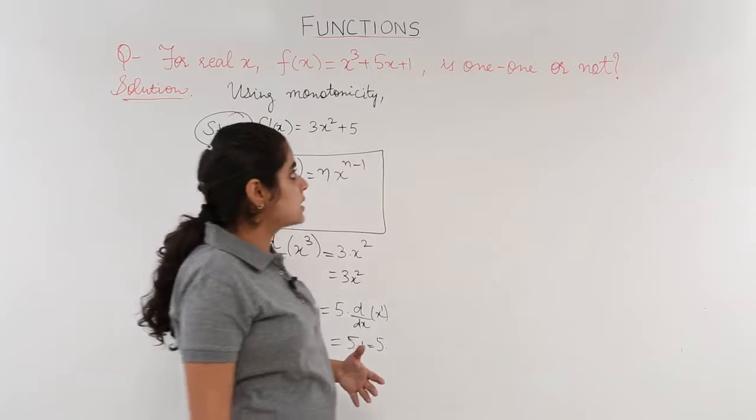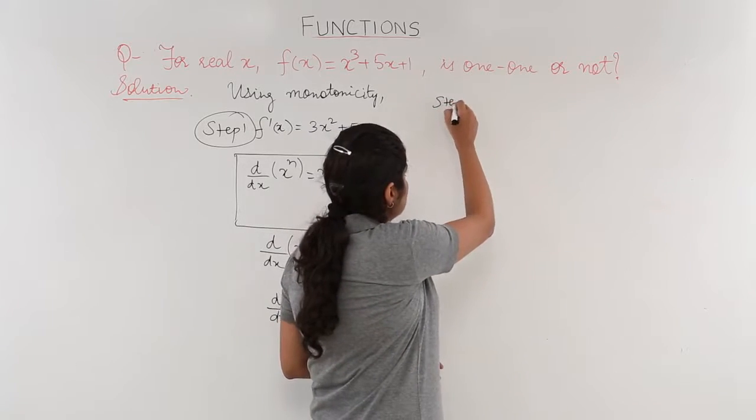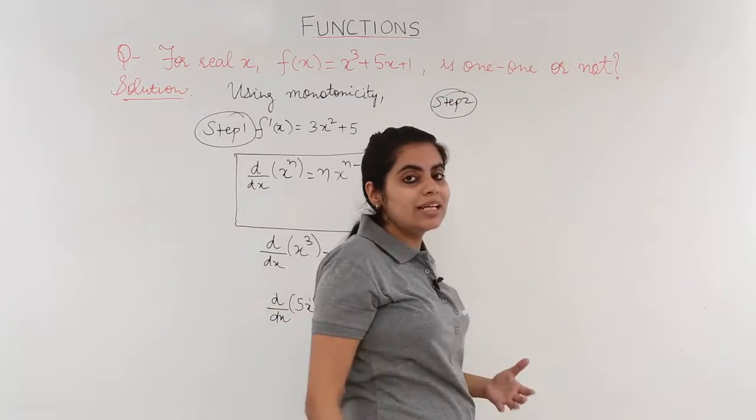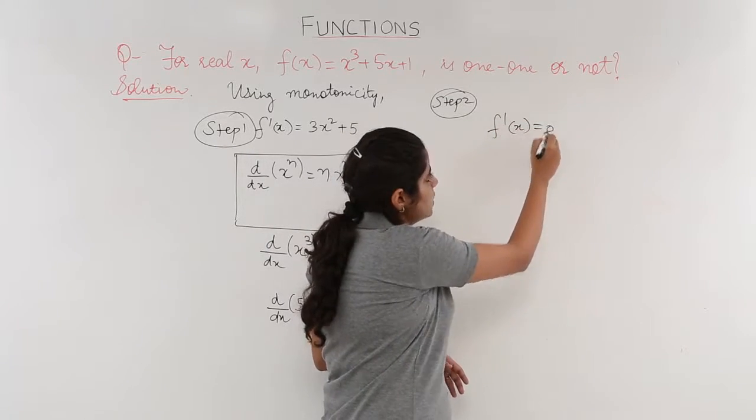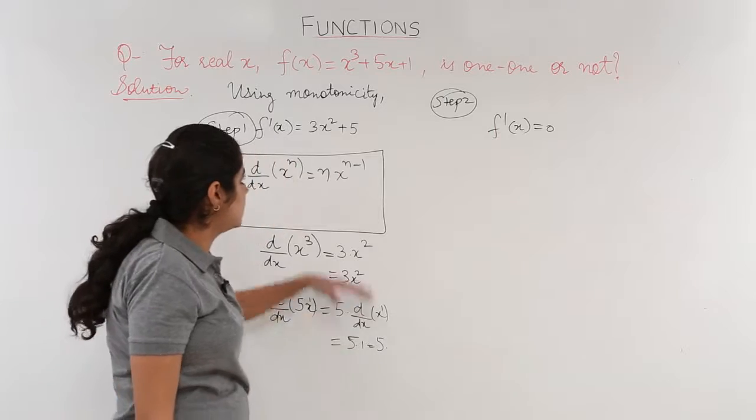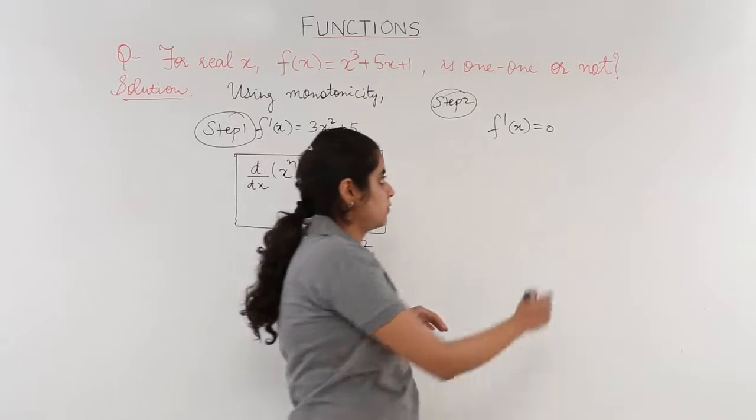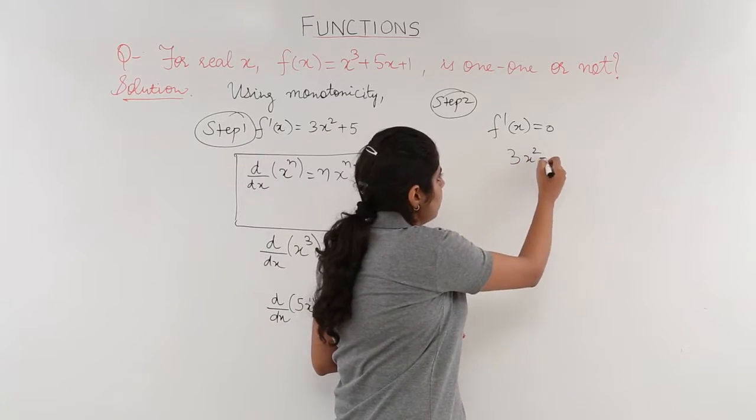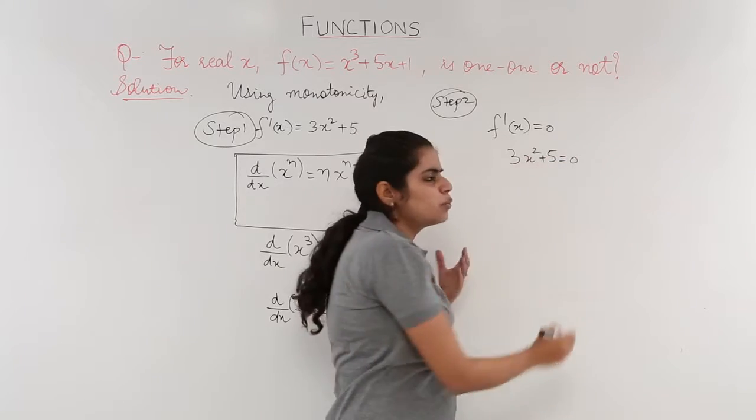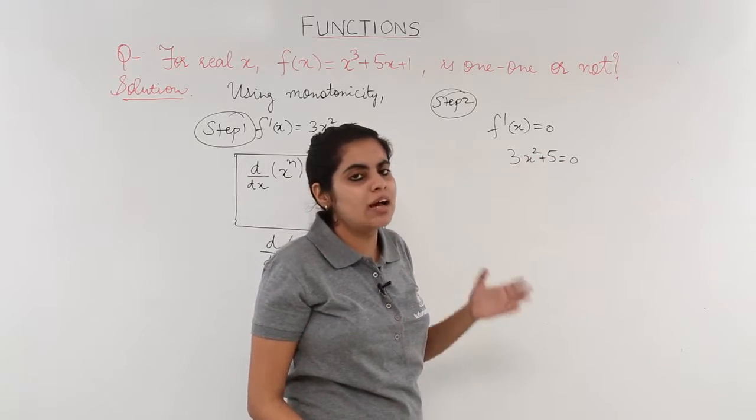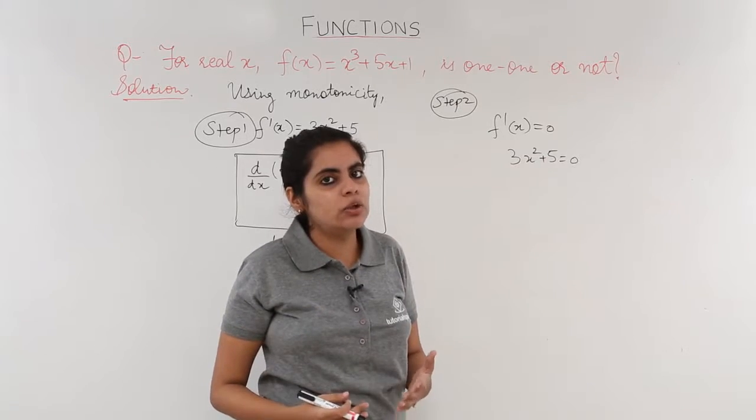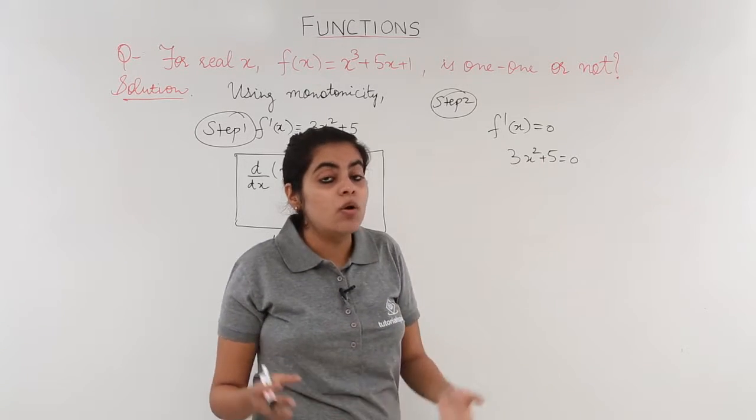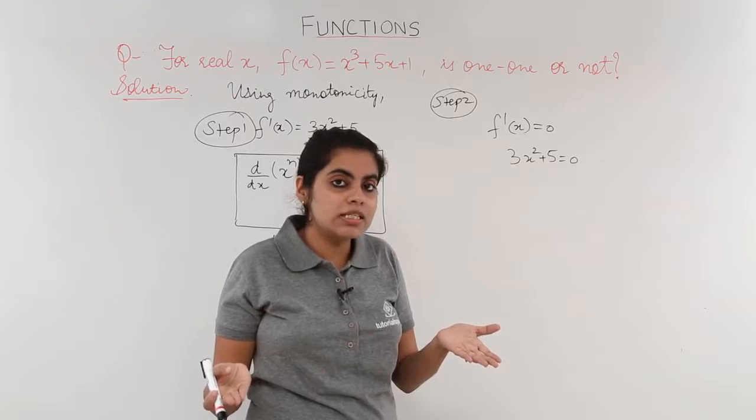What was the second step? Step 2 was putting the derivative value equal to 0. So you put f'(x) equal to 0. It is 3x² + 5 equal to 0. So one way is you just have this f'(x), you put it equal to 0, you find x value and then continue with the third step.